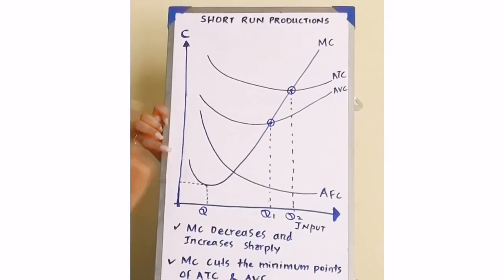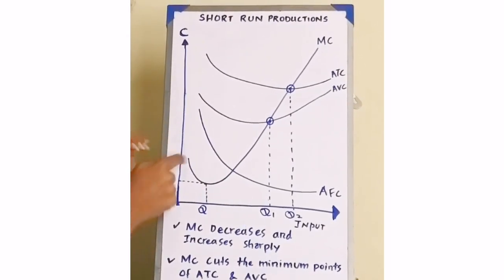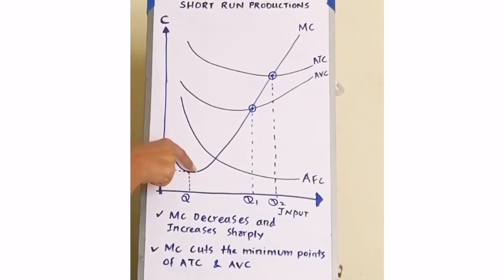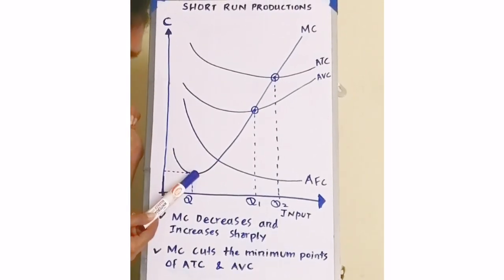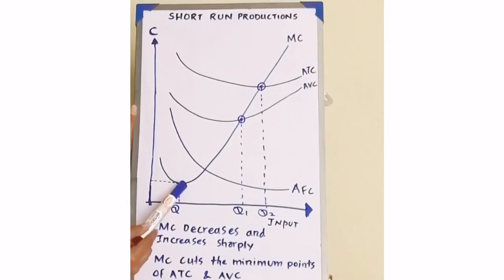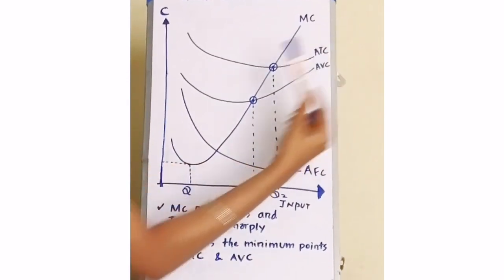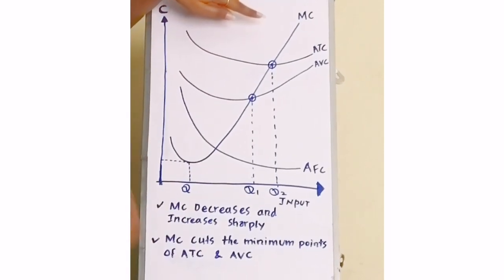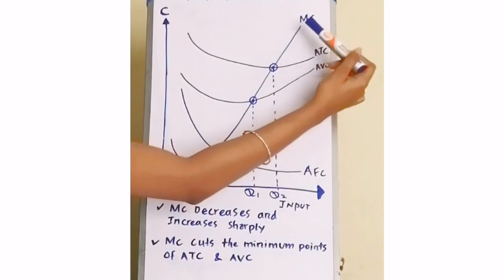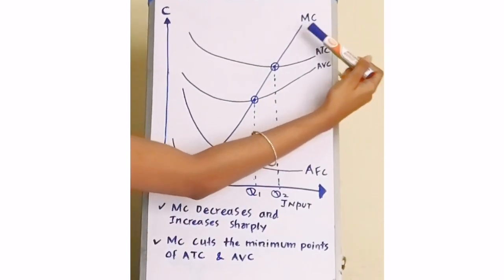First, we should write about the marginal cost curve. The MC decreases and thereafter reaches its minimum point. After reaching the minimum point, it will start to increase sharply. Remember, it is critically important to mention the word 'sharply.' That is how the MC curve behaves.